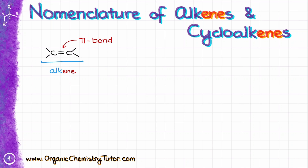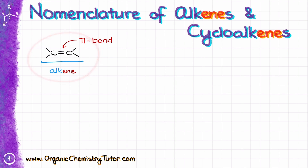Hello everyone, Victor is here, and in this video I'm going to go over the nomenclature of alkenes and cycloalkenes, and I will also show you the most common traps that I often see on exams and how to avoid those mistakes. Alkenes are compounds that contain a double bond, a pi bond.